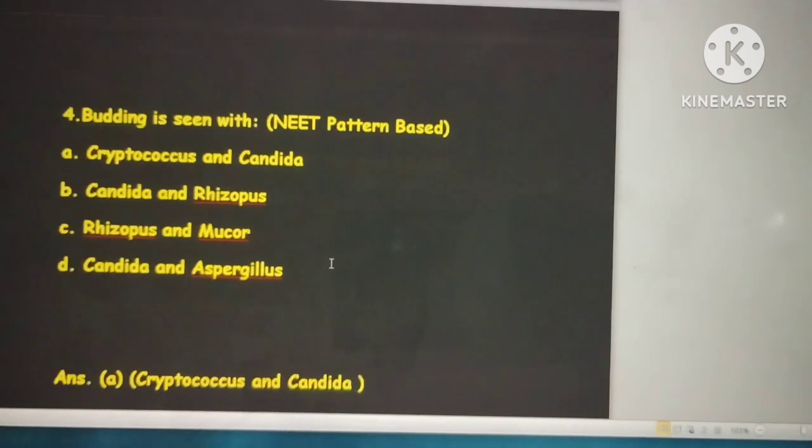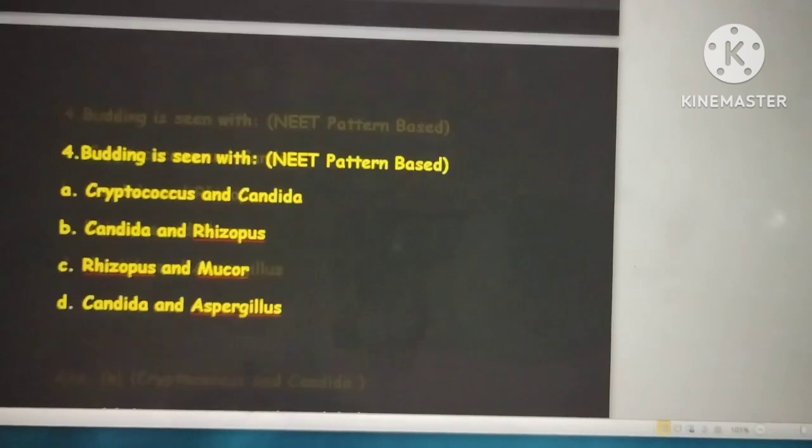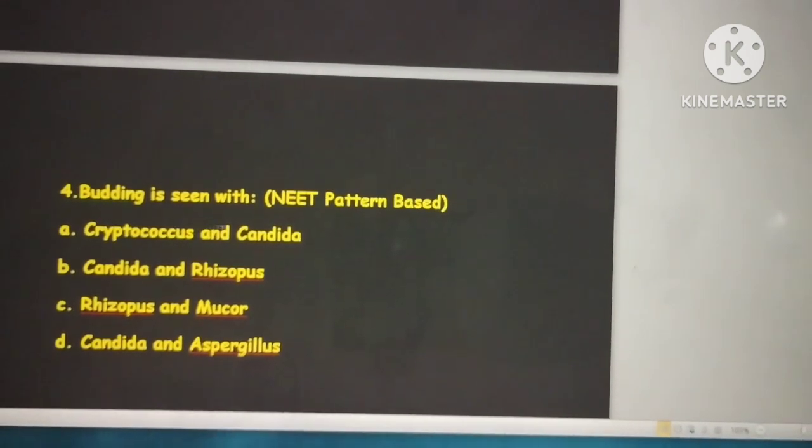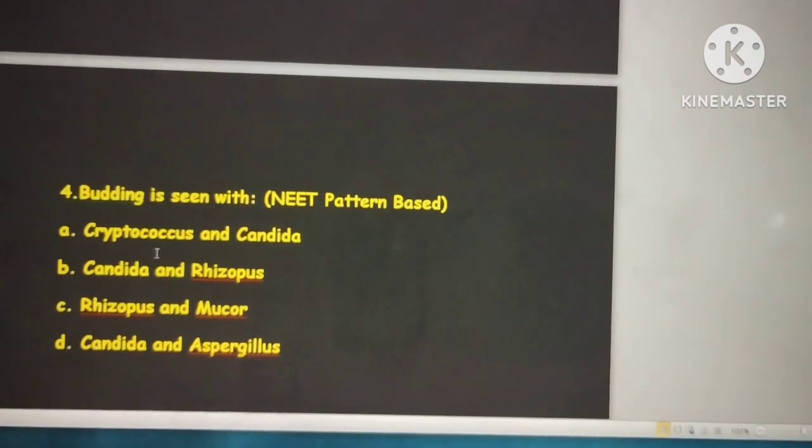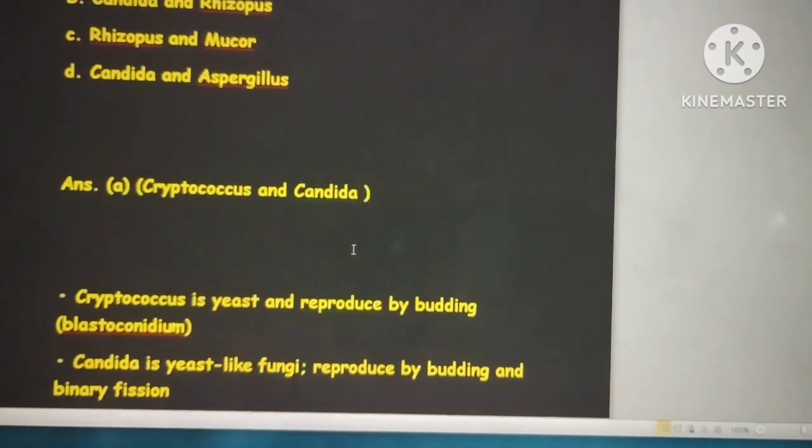Next: budding is seen with Cryptococcus and Candida, Candida and Rhizopus, Rhizopus and Mucor, or Candida and Aspergillus. This is tricky because Candida appears in both options A and B. When you look at both options, budding is present in Cryptococcus and Candida, so the answer is A.